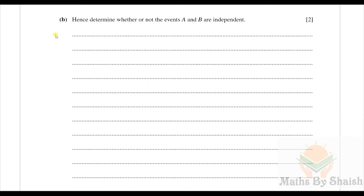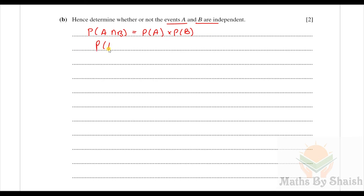Part b: determine whether events A and B are independent. We check whether P(A∩B) equals P(A) × P(B). If they are equal, the events are independent; otherwise they are not. We already have P(A∩B) = 5/36 from part a, so now we need to find P(A) and P(B).